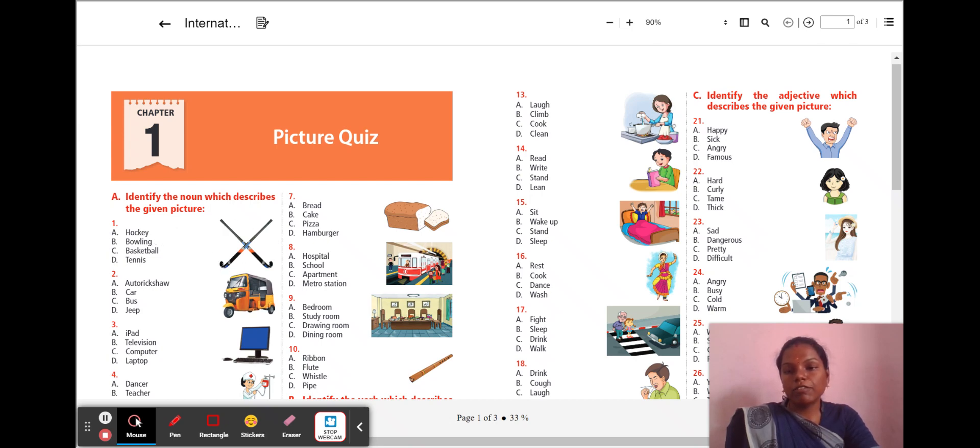Let's move to section A. Identify the noun which describes the given picture. Look at this picture. It is a kind of sports equipment. So, find out the sport in the given four options. A. Hockey B. Bowling C. Basketball D. Tennis. The answer is yes, I hope you all selected the right answer. A. Hockey.